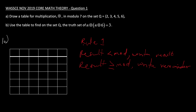So these are our two rules. We have our table with multiplication across two, three, four, five, and six. Now two times two is four — four is less than our modulo, so we write four. Two times three is six — six is less than our modulo of seven, so we write six.